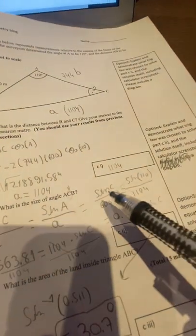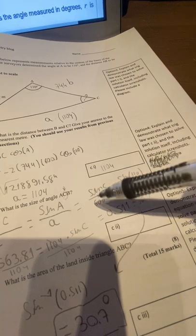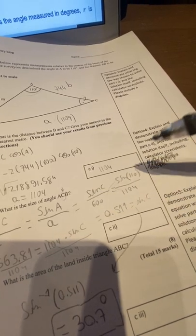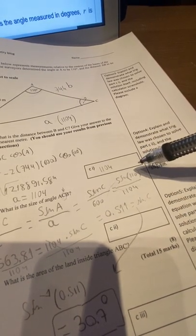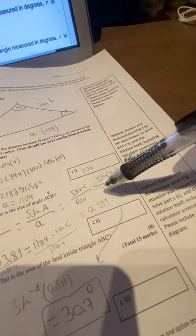We're going to have sine of C, which is what we're finding. Sine of C is going to be divided by 600, which is side C, and sine of 110, which is sine of angle A, is going to be divided by side A, which is 1104.